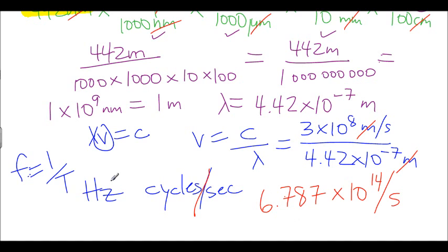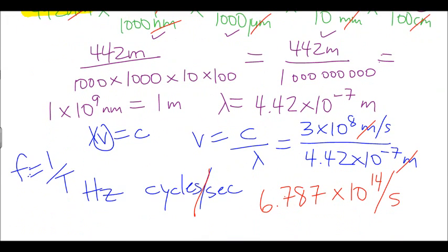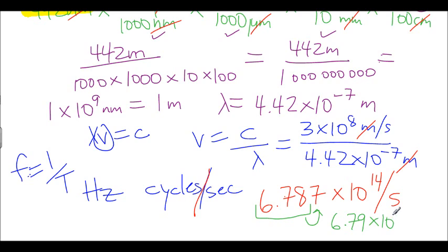Looking at significant digits, there are three significant digits in the question, so we need three significant digits in our answer. We take 6.78 and look at the next digit — the 7 — so our final answer rounds to 6.79 times 10 to the power of 14 cycles per second, and that is our frequency.